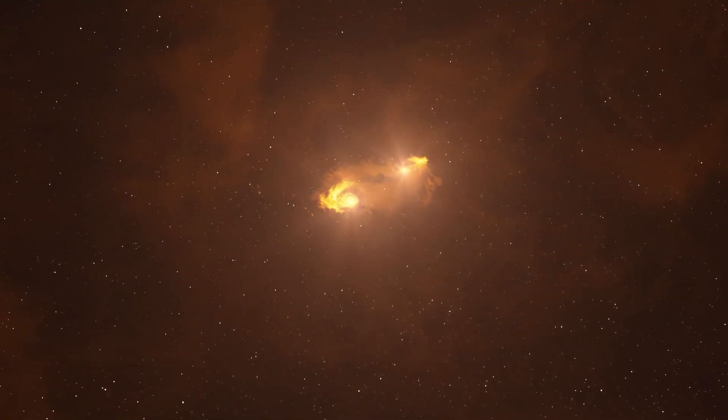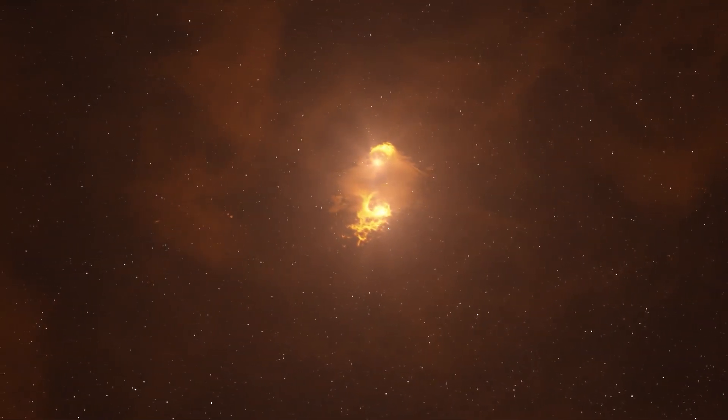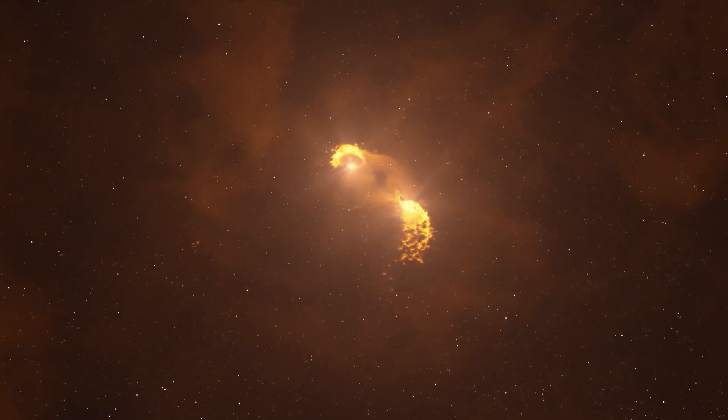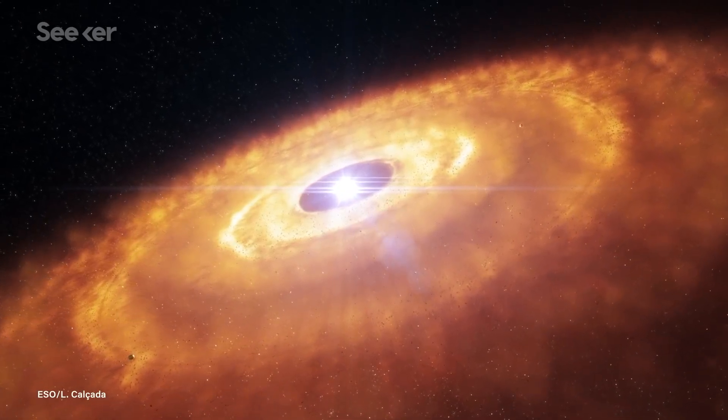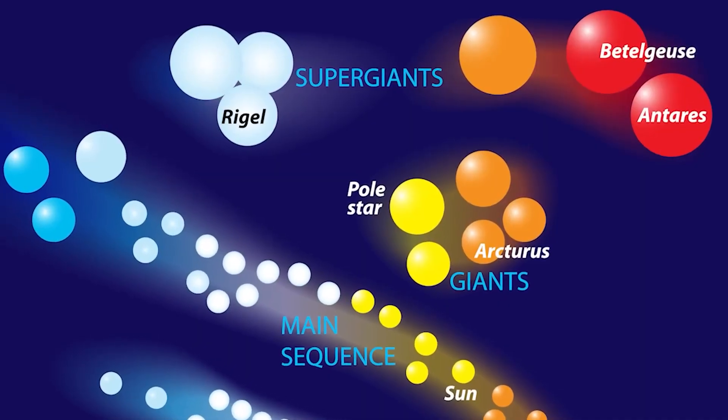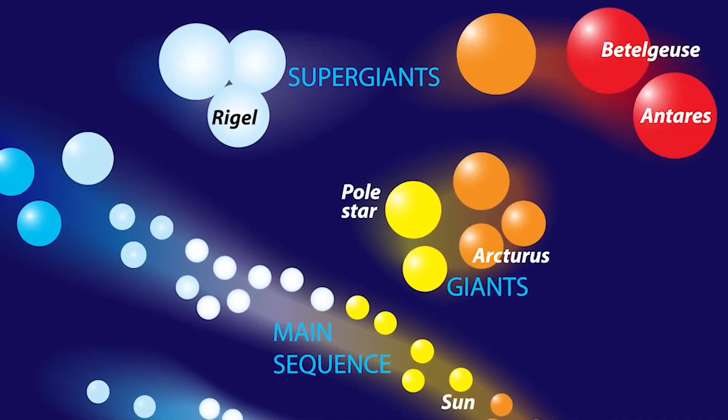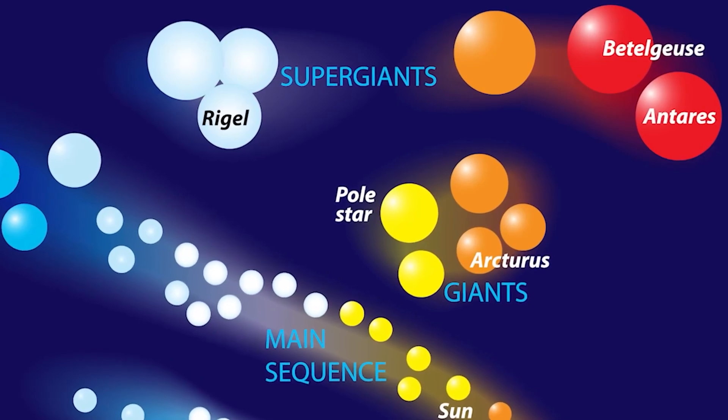The circumstellar envelope, which is made up of material ejected from the star and emits and absorbs light, makes it difficult to define Betelgeuse's photosphere. The apparent size of the star varies with wavelength, making it difficult to compare observations.